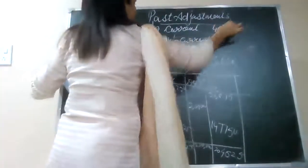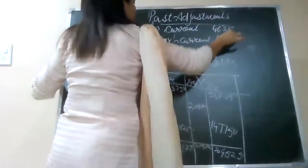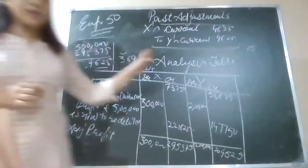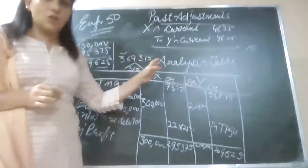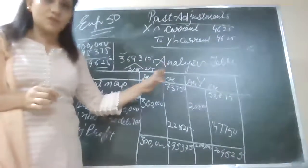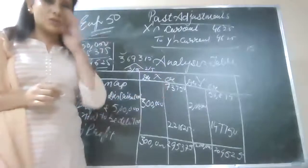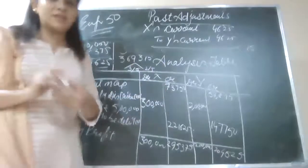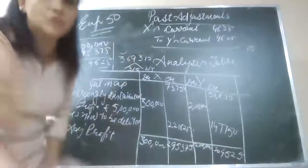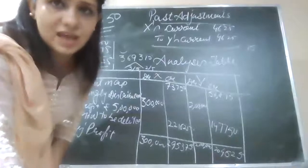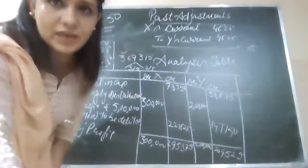So the adjustment entry is: X current account to be debited to Y current account with rupees 4,625, being an adjustment entry passed for the omission of interest on capital. This was the first case. Now let's proceed to the second case where the capitals are fluctuating.